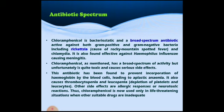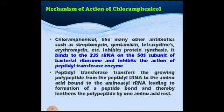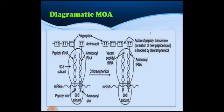Certain allergic responses or neurotoxic reactions are also present. Chloramphenicol, like other antibiotics such as streptomycin, gentamicin, tetracycline, and erythromycin, inhibits protein synthesis. It binds to the 23S subunit of rRNA and the 50S subunit of the bacterial ribosome, inhibiting the action of the peptidyl transferase enzyme. By that, it prevents the formation of peptide bonds, thereby preventing elongation of the polypeptide chain by one amino acid residue. As seen in the picture of the mechanism of action, when we look at the 50S subunit, it also affects the action of peptidyl transferase.